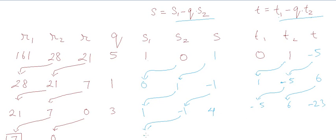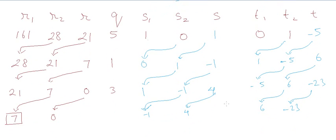We will make one more shift. S1 is now minus 1 and S2 is now 6, and T2 is now minus 23. And now we have actually found the value of S and T. S is equal to minus 1 and T is equal to 6.